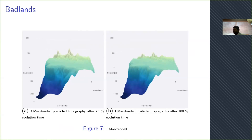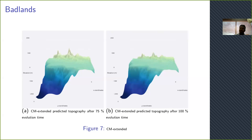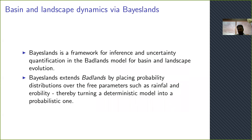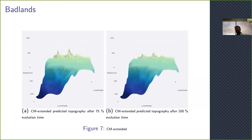Our problem — the inversion problem — is to let the Bayesian inference algorithm find those parameter values that we fixed. In that way we know if the methodology works, because in real-world problems we won't know what those values are. We take the topography after one million years as a real-world topography and try to match it with what Badlands produces, seeing the differences between them.